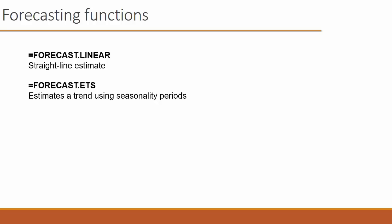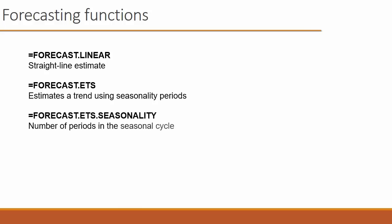There's also FORECAST.ETS, and that estimates the trend using seasonality. So if you have seasonal data in your numbers, you want to use FORECAST.ETS. Now, what is the length of that season? FORECAST.ETS.SEASONALITY will tell you. So maybe you have a six-month or 12-month season. That means what is the entire cycle — like how many months are in that entire cycle.